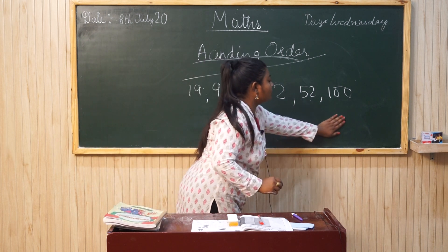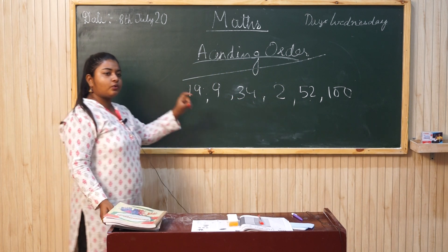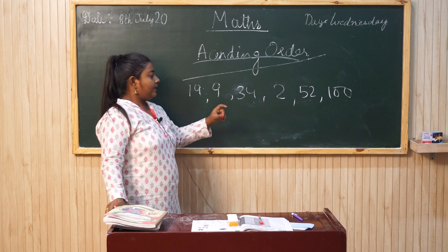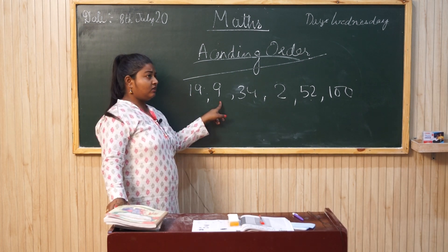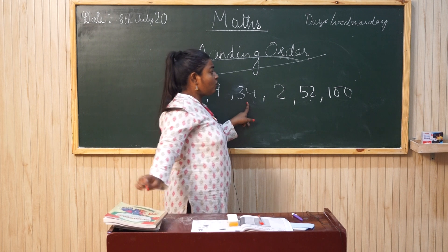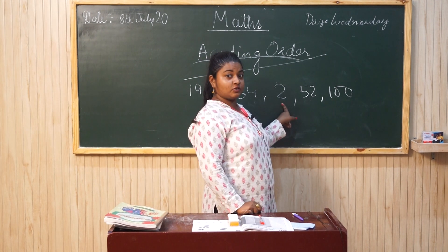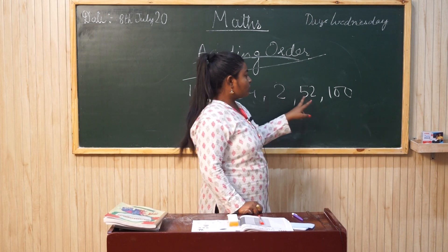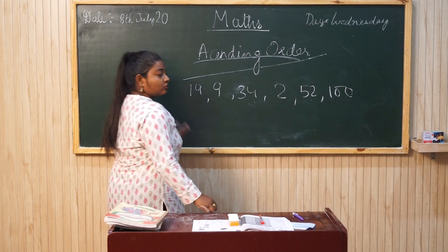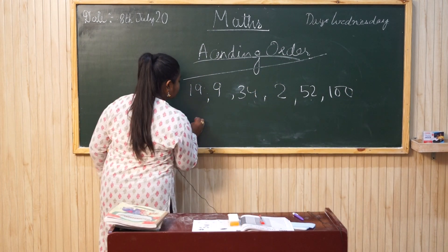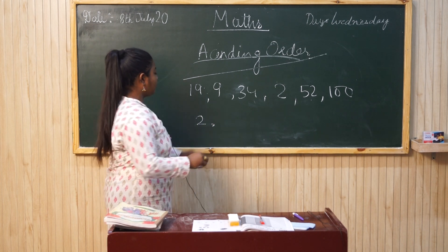So first, what do you think? What is the smallest number? Is it 19? No. Is it 9? No. Is it 34? No. Is it 2? Yes, it's 2, because all other numbers like 50 to 100 are greater — that's bigger. So 2 will come first. Then you will put a comma.